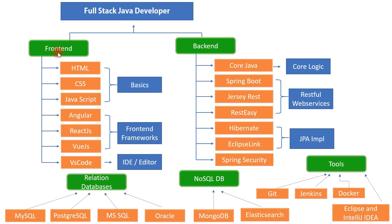For front-end development, the required skills are HTML, CSS, and JavaScript — these are the three web development fundamentals. HTML is used to develop web pages, CSS to style them, and JavaScript to manipulate DOM elements. Once you are familiar with these fundamentals, you can learn a modern front-end framework like Angular, React.js, or Vue.js. As a full stack Java developer, you should know at least one front-end JavaScript framework.